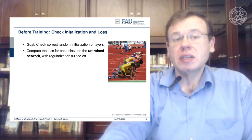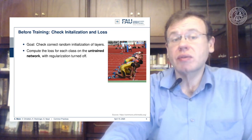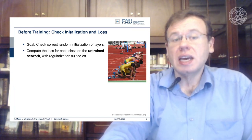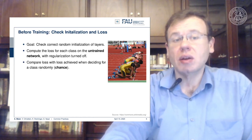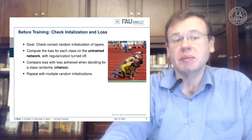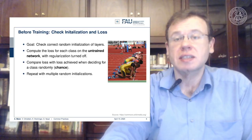The goal of initialization is to have a correct random initialization of the layers. You can compute the loss for each class on the untrained network with regularization turned off. That should give a random classification, so the loss should match what you'd expect from random guessing. Repeat with multiple random initializations just to check that nothing is wrong with the initialization. Keep in mind, nothing in machine learning is exact.